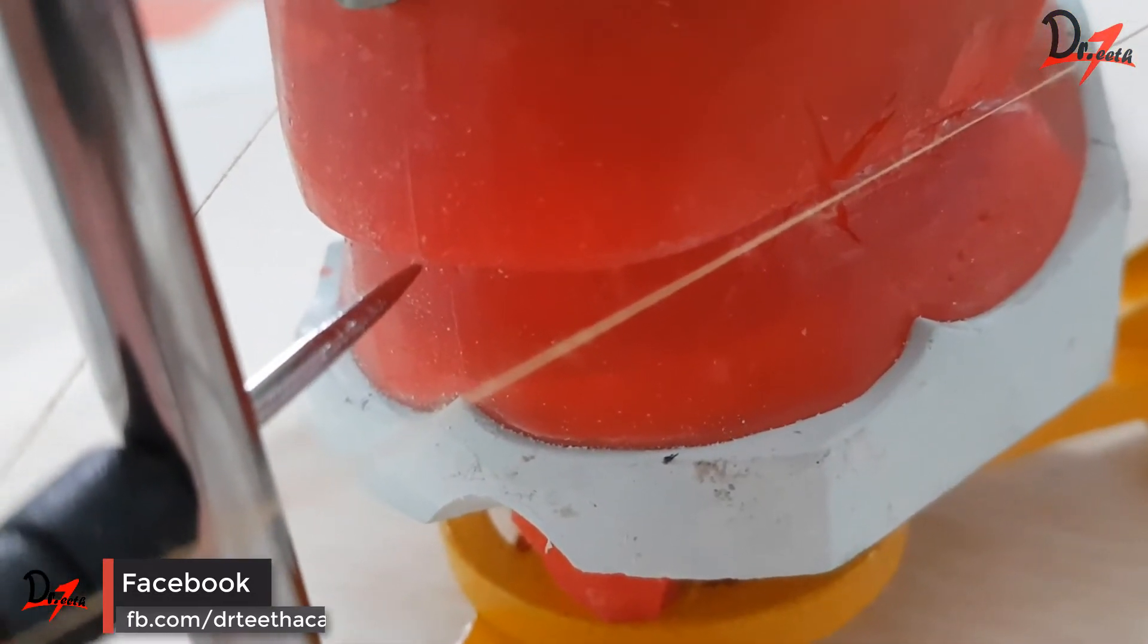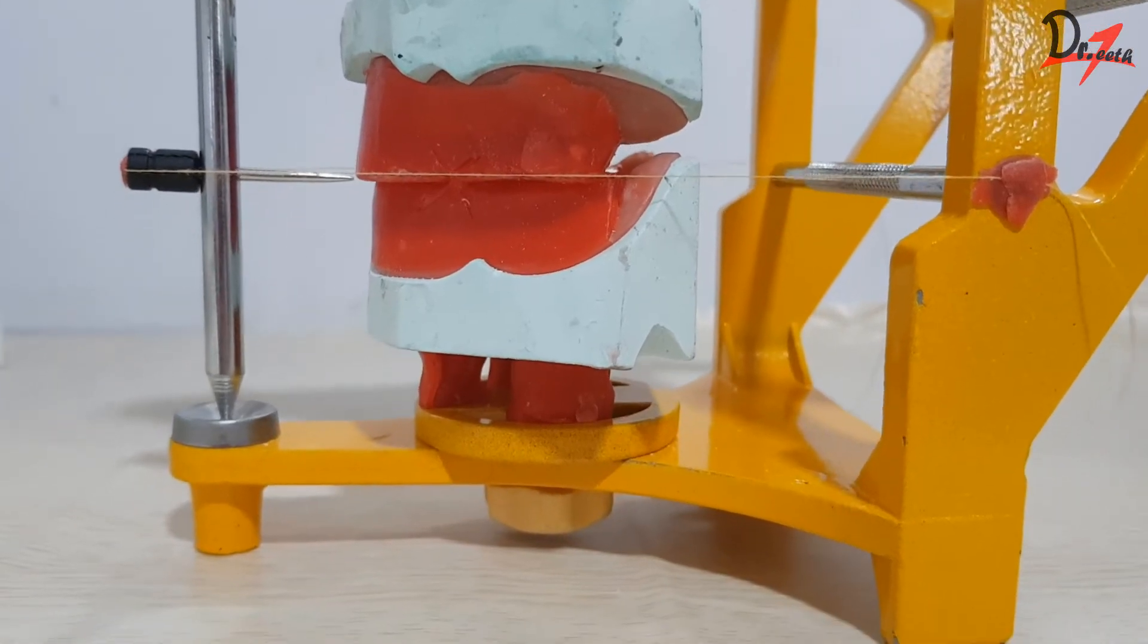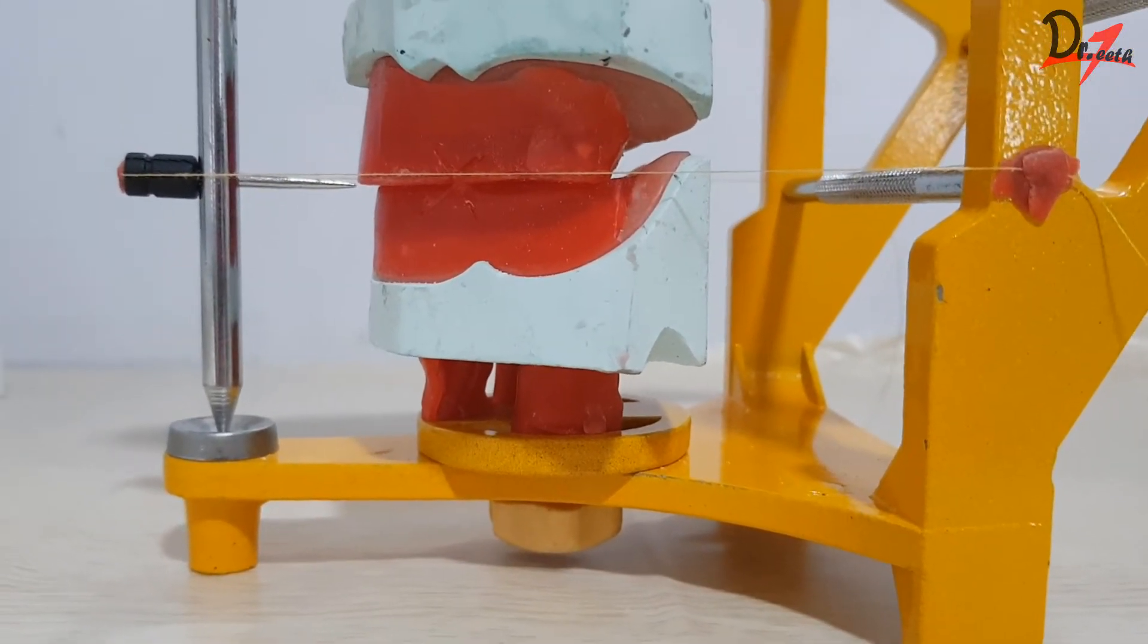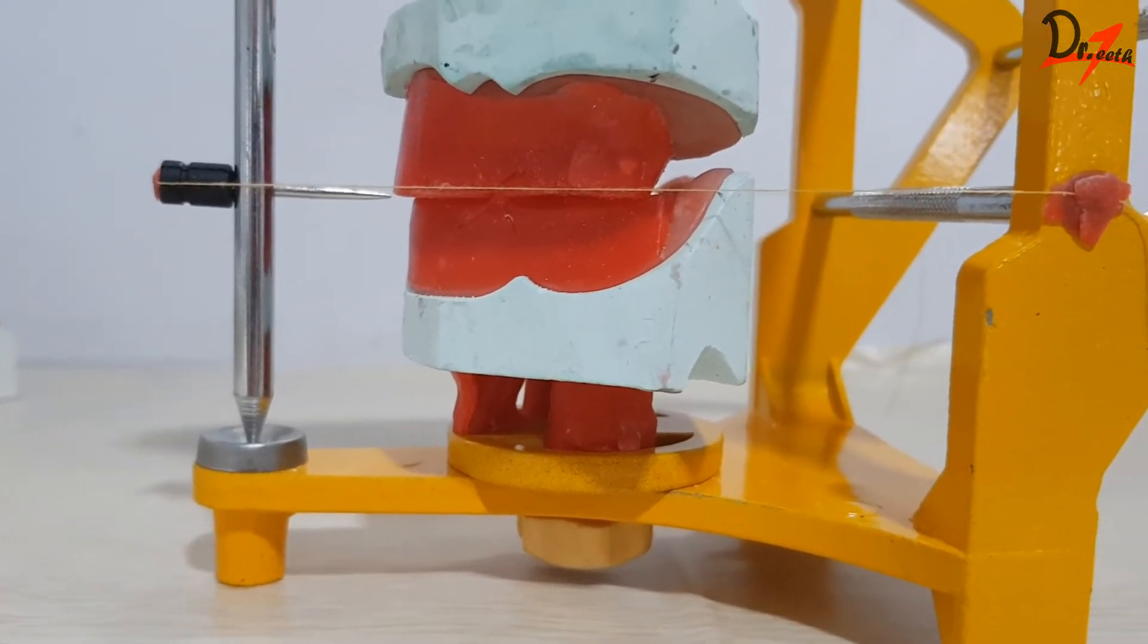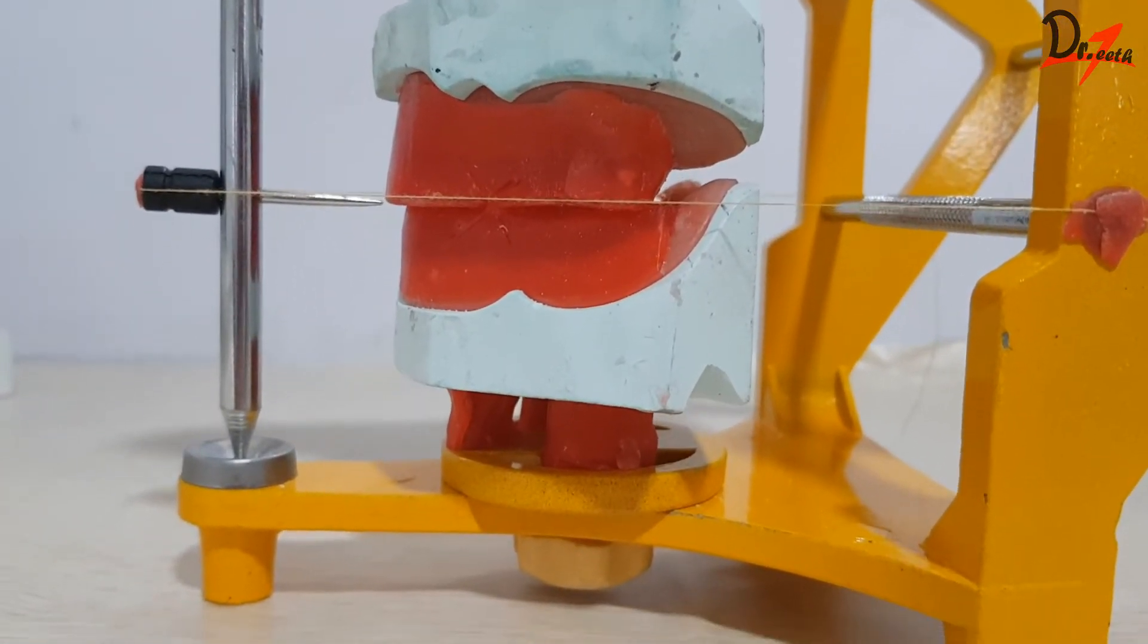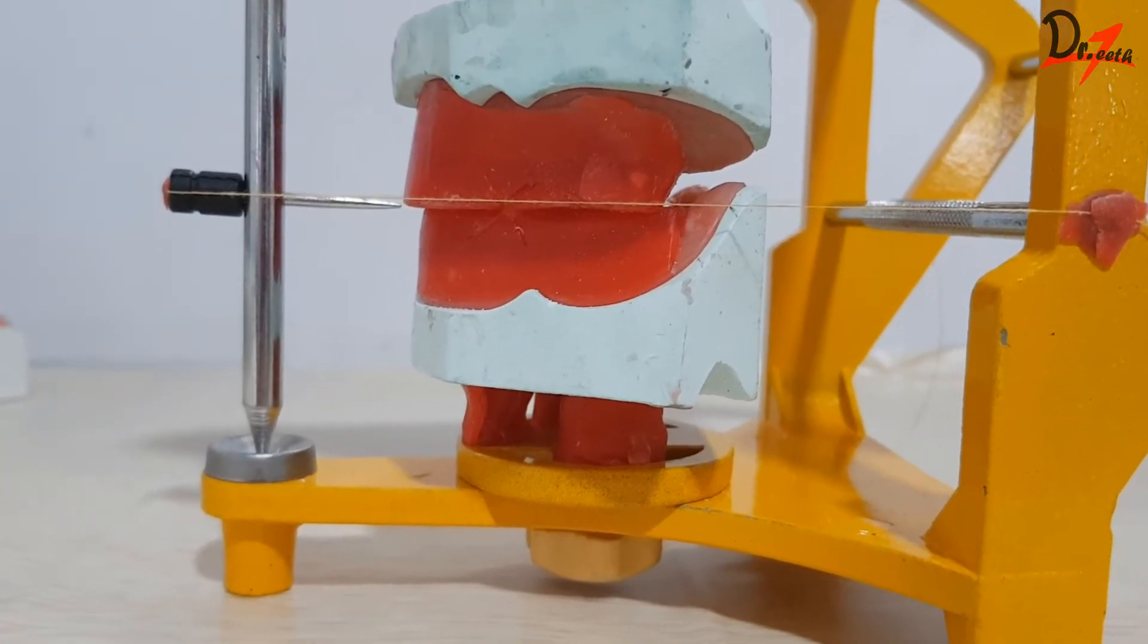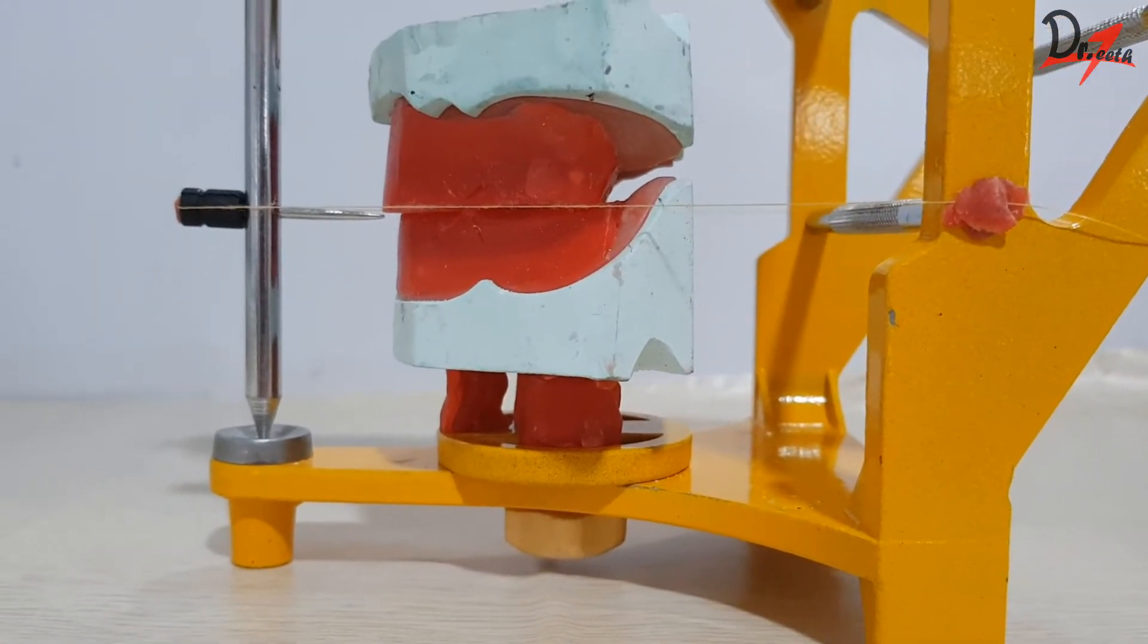Then checking from the left side, what you have to do, you have to keep your eye at the level of the thread and see if the plane of the rim is in line with the thread. And we have to adjust the modeling clay or the modeling wax accordingly.